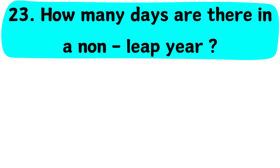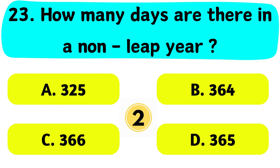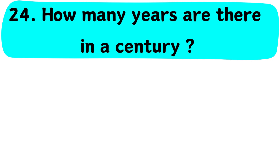Question No. 23. How many days are there in a non-leap year? A. 325, B. 364, C. 366, D. 365. The correct answer is Option D. 365 days.